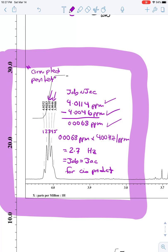Doing that multiplication gives us a value of 2.7 hertz. Again, that's for JAB equaling about equal to JAC. And so that's the value you would report for that.